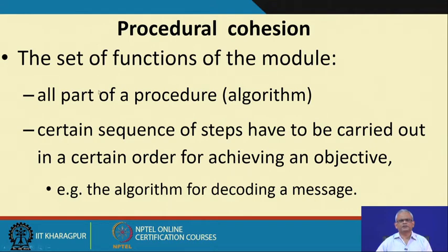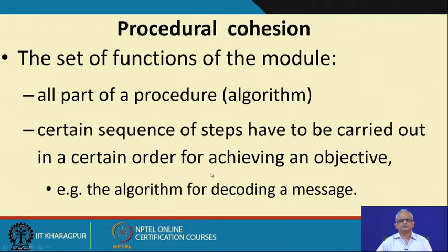A still better form of cohesion is procedural cohesion. Here the different functions in the module are part of some algorithm — they carry out steps such as initialization, discrete cosine transform, entropy calculation, and so on. These are steps that are part of an algorithm, put together even though they may do very different things.